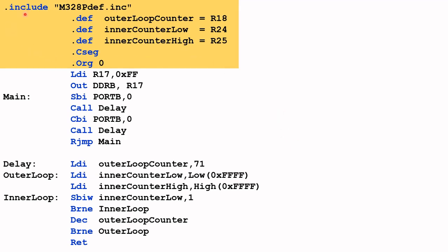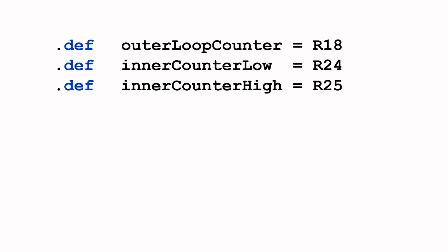I have removed the comments from the code so that it's easy to read and so that I can fit it into one slide. These are the directives which are highlighted here: .include, .cseg, and .org. I've covered these directives in my previous videos, so I'll focus on the .def directive, which are these three lines of code here. I have extracted the .def directives here for discussion purposes.